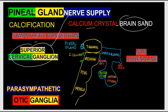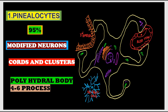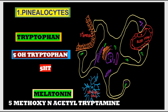The hormone melatonin is synthesized in pinealocytes, which make up 95% of the cells of the pineal gland. These are highly modified neurons arranged as cords and clusters, typically having a polyhedral body with four to six processes. Secretions from pinealocytes can move into the third ventricle or into blood vessels through their connections.